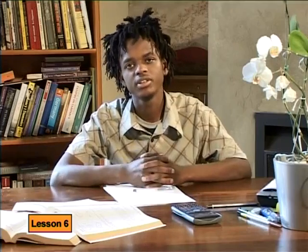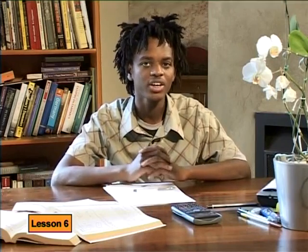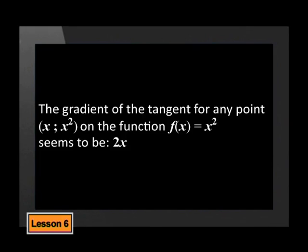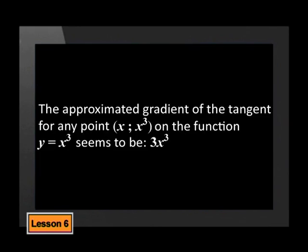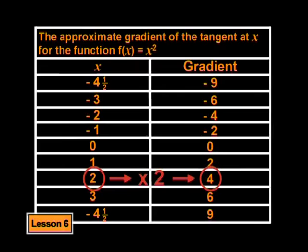Now, where were we in our problem? Can you remind us, MacGyver? Absolutely. By the end of the last lesson, we had reached a point where we found the rule for finding the gradient of the tangent to the function y equals x squared and y equals x cubed at any point x, f(x) on these graphs. That's right. And we did that both by numerical exploration and by algebra. This is the table developed for the function f(x) equals x squared. By simply looking at the table, we could see that the gradient of the tangent at each point on the curve must be twice the x value of that point.